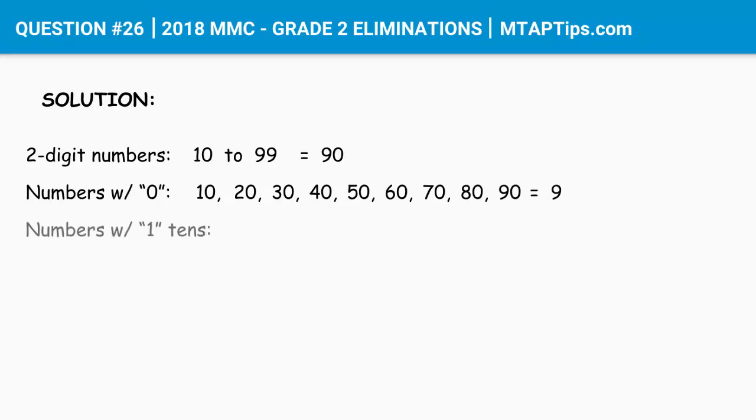Now, the numbers with 1 as tens place value. Supposed to start from 10, but we already counted 10 above with 0 digit. So we're not going to include that here anymore. And we'll start from 11, 12, 13, 14, 15, 16, 17, 18, and 19. And there are nine of them.